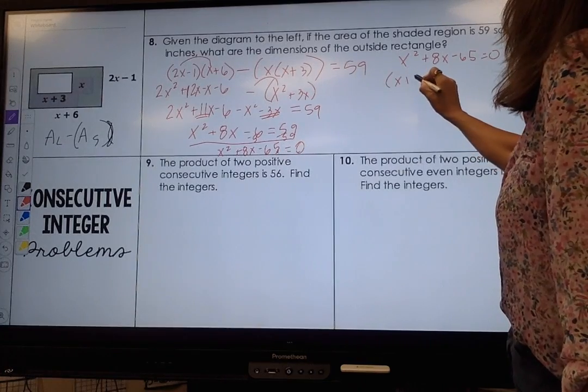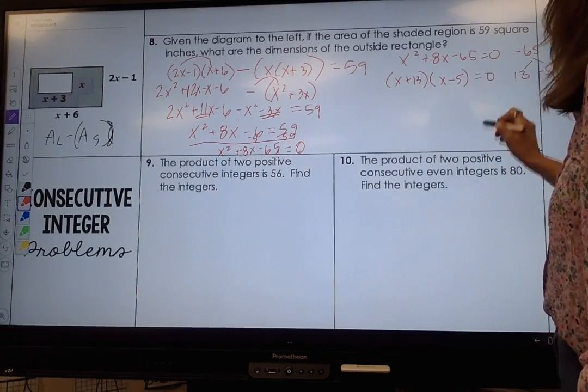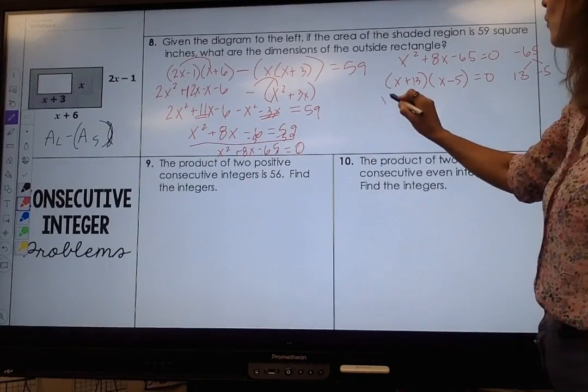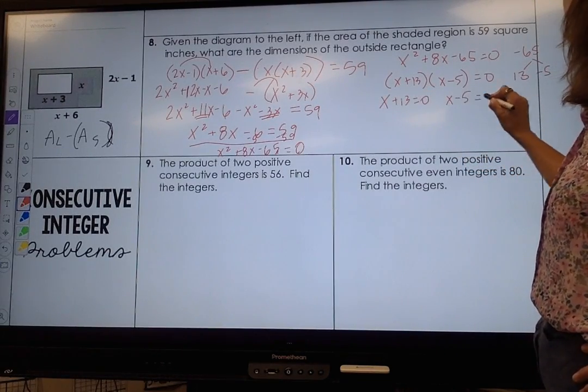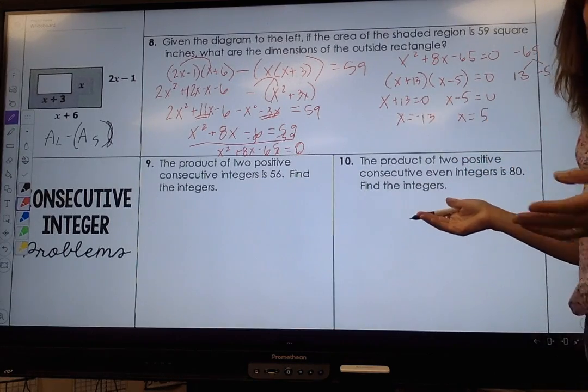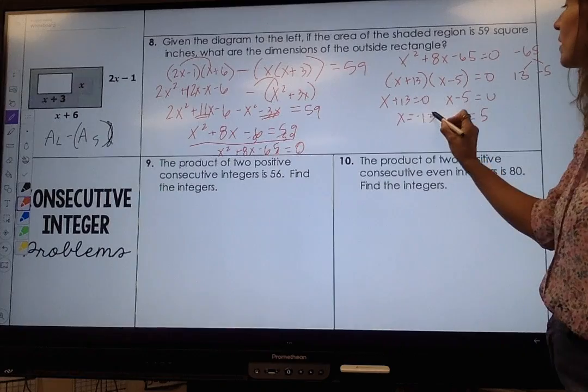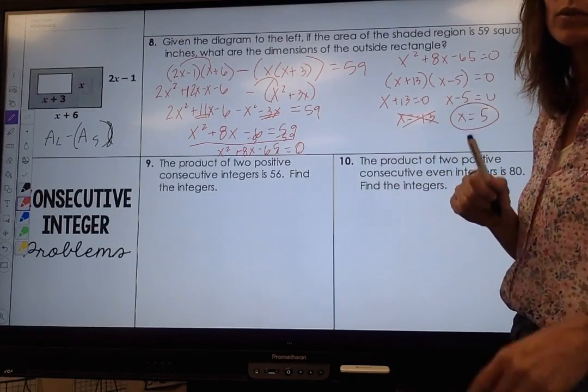So here I have x plus 13, x minus 5, and now I'm going to set my factors equal to zero and solve, and I get x equals negative 13 and x equals positive 5. Now the extraneous information: it does not make sense for x to equal negative 13, so I'm going to cross that out and x is equal to 5.